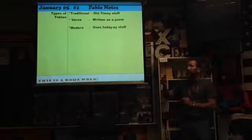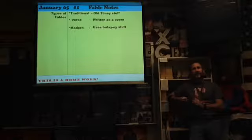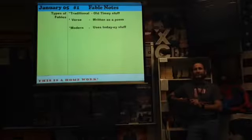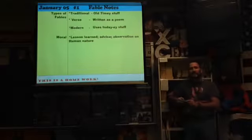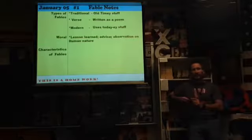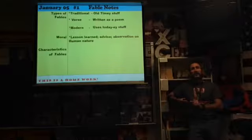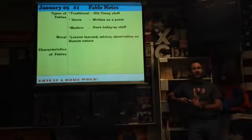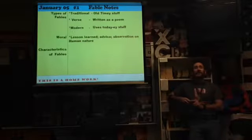Modern is where we use this today-y stuff. All of our fables in order to exist as a fable, what is it every fable has to have? Moral. Then what is a moral? A lesson learned about it. It is going to be the lesson learned, advice, that observation on human nature. And we talked about the five characteristics of what a fable is. Why did we have fables in the first place way back when? To teach kids not to be dumb. And that's why we still have school to this day.